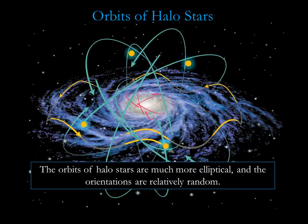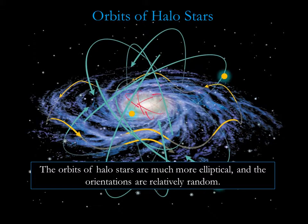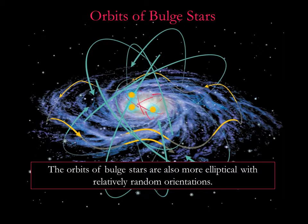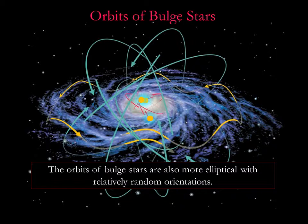The orbits of halo stars are much more elliptical, and the orientations are relatively random. The halo stars can go thousands of light years above and below the disk. The orbits of bulge stars are also more elliptical with relatively random orientations. The differences in the orbits of the disk, bulge, and halo stars offer astronomers clues to how our galaxy formed.